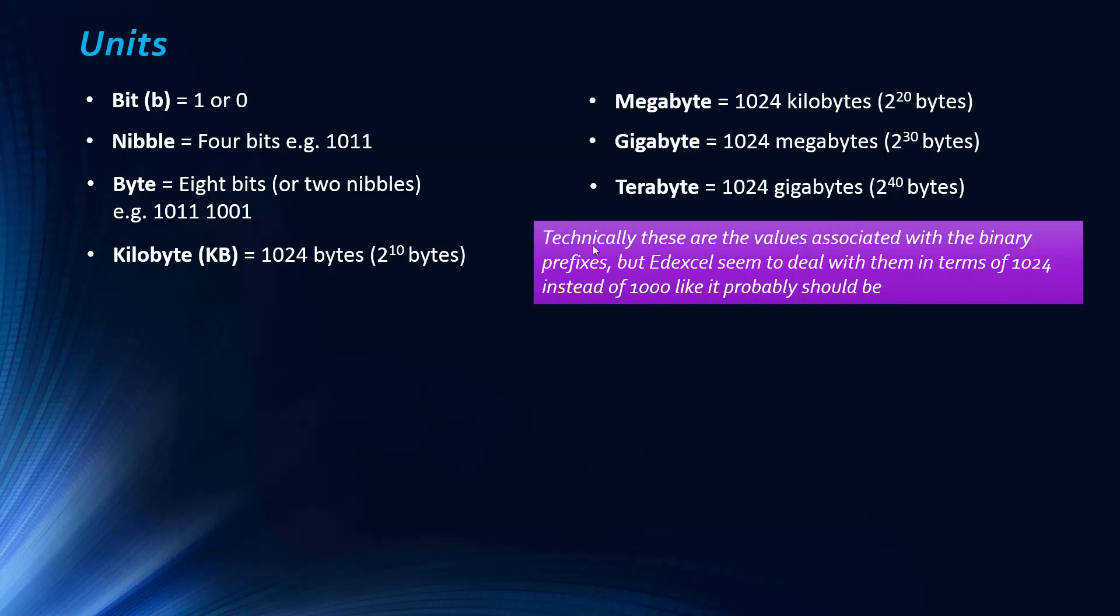Technically, I've done a bit of a caveat here. Edexcel seems to treat it like I've written here, so you want to learn this. But it's a problem with computer science, because it's developed so quickly, things often get left behind. Someone at some point decided that because 1024 bytes is close to 1000, we're going to adapt the kilo prefix, which is really in terms of 1000, base 10, but we're dealing with base 2. We get a number that's close to 1000 but not quite 1000, and that's caused quite a lot of issues.